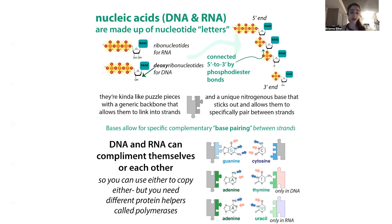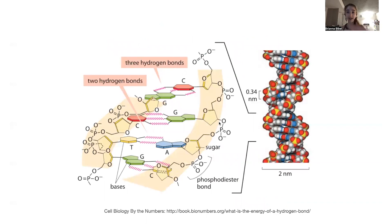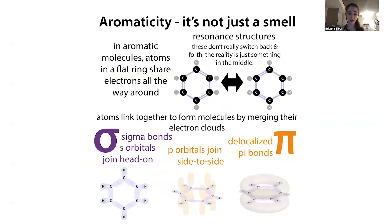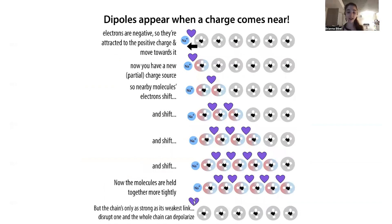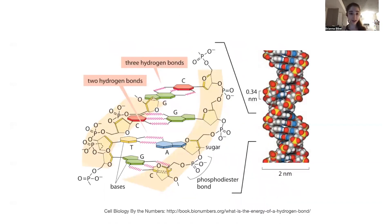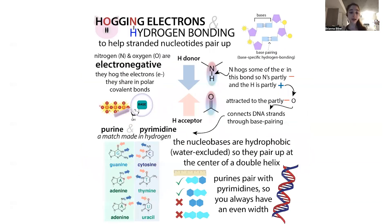G and C form three hydrogen bonds while A and T form two, which is one reason why GC regions are more stuck together. However, the main reason actually has to do with base stacking — inside the DNA the bases stack on one another and you get partial-charge attractions from these aromatic rings syncing up. The hydrogen bonding is only one of the reasons for that stronger interaction in GC-rich regions.